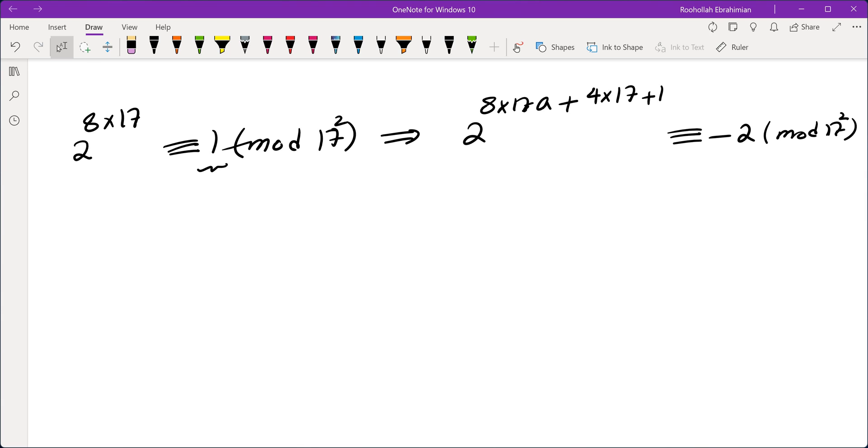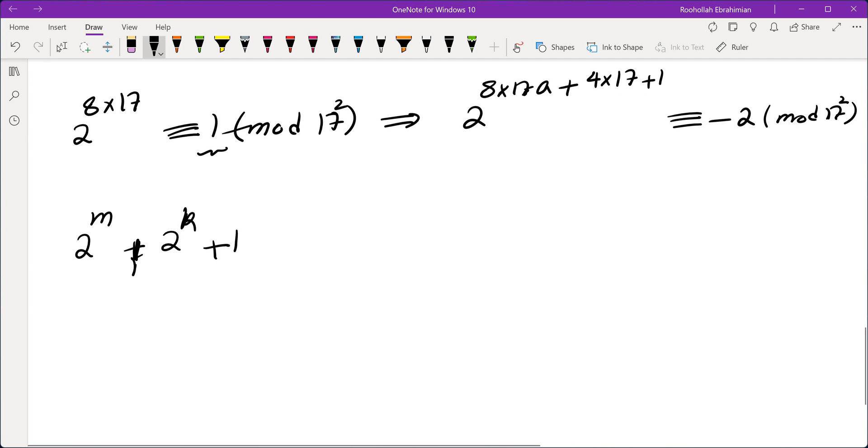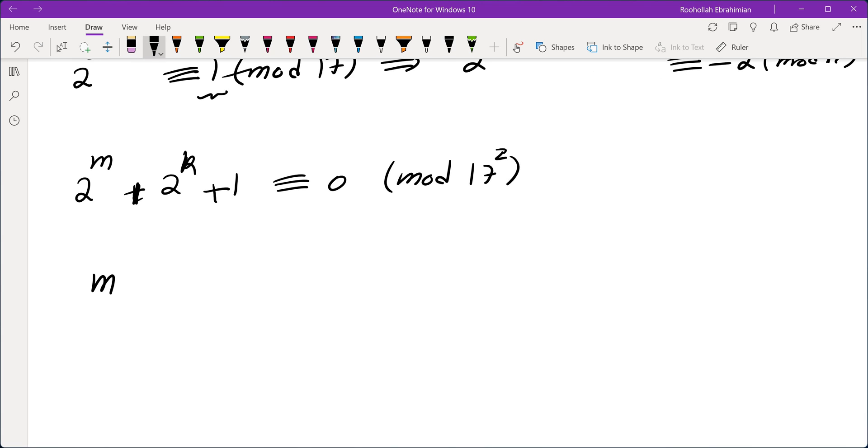So now, we should be able to solve the problem. So we're going to take 2 to the power of m plus 2 to the power of k plus 1. And we're going to make sure that this is, in fact, divisible by 17 squared. How do we do that? The way we do that is, we're going to make sure 2 to the power of m is 1 by taking m to be 0 mod 8 times 17,